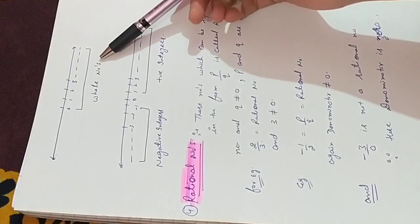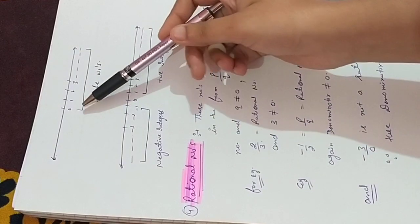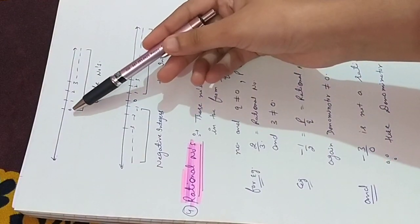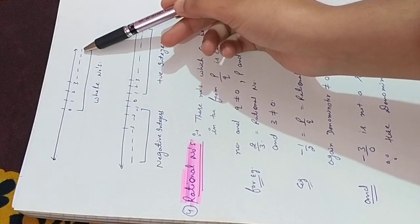Next is whole numbers. Whole numbers includes 0 also. This is called whole numbers.